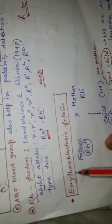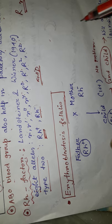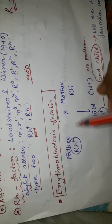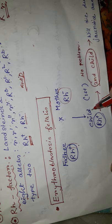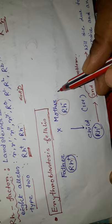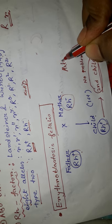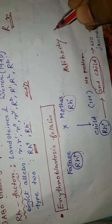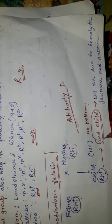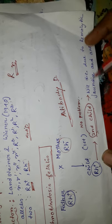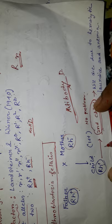The next topic is erythroblastosis fetalis. It is an abnormal disease that occurs when the father is RH positive and the mother is RH negative. Their first child, if RH positive, there is no problem. But the mother's body produces antibody D for antigen D. After the second child, the child will die due to hemolytic jaundice and anemia, because these antibodies coagulate the blood of the second child who is RH positive.